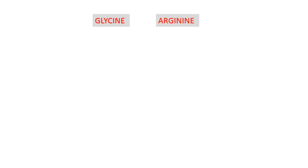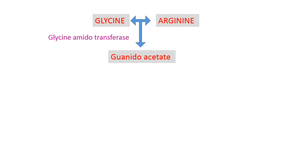Creatinine is formed from three amino acids: glycine, arginine, and methionine, and from creatine there is a synthesis of creatinine. First, the guanidino group from arginine is transferred to glycine, leading to the synthesis of guanidoacetate by the glycine amidinotransferase enzyme. This particular reaction occurs in the kidney.